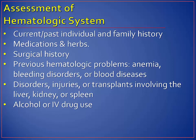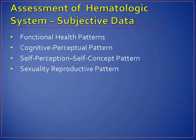Alcohol is caustic to the GI mucosa and can cause GI bleeding, esophageal varices, and decreased absorption of cobalamin and other nutrients resulting in vitamin deficiencies. Chronic alcoholism can damage platelet function and the liver, affecting the production of clotting factors and leading to bleeding problems.